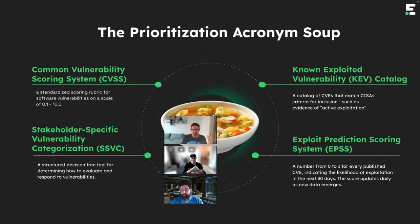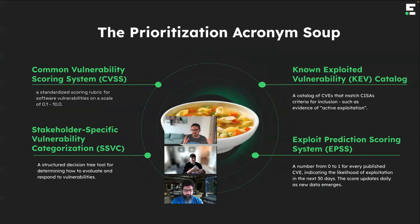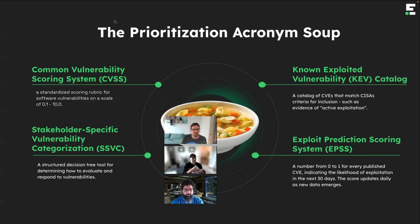A good place to start is by understanding the acronym soup — all the different prioritization methods. We're not going to be using slides for most of this conversation, but we did want to briefly talk about all of these things. We hear about CVSS, SSVC, EPSS, and KEV a lot. Darren, can you help us understand where these things sit, what they're good at, and what they're not good at? Maybe start with CVSS.